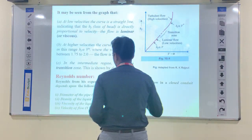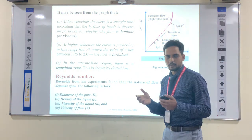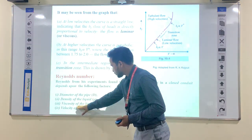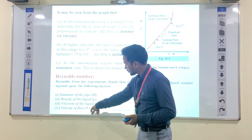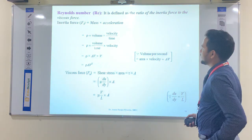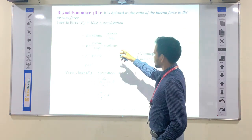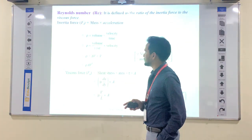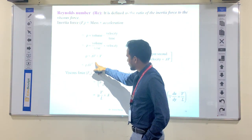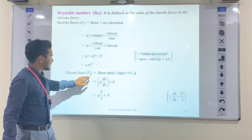The Reynolds number depends on some factors: the diameter of the pipe, the density of the liquid, the viscosity of the liquid, and the velocity of flow. From these, the Reynolds number is defined as the ratio of inertia force to viscous force. The inertia force is mass times acceleration, which gives ρV², and the viscous force involves dynamic viscosity.